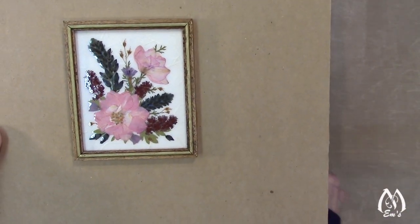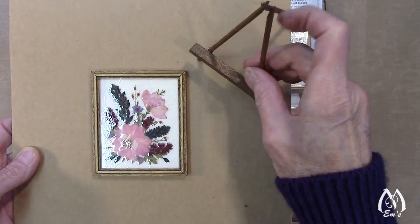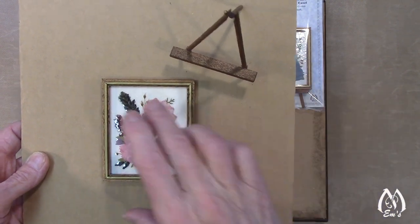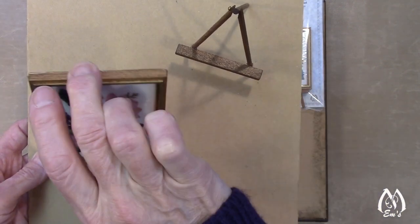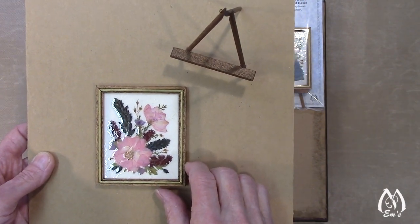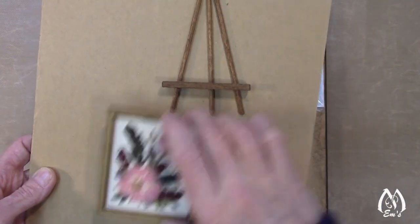Underneath this paper there are also magnets so that this can be used either with the little mini easel, which is this guy, so it can sit on the mini easel, or you can put it on a refrigerator or something that's magnetized. So it serves a dual purpose.